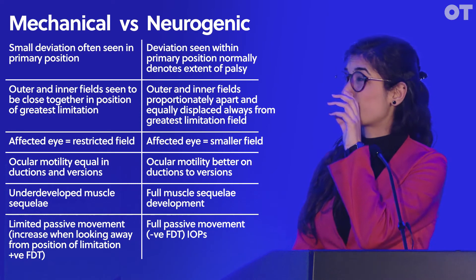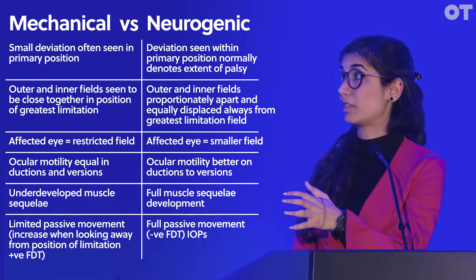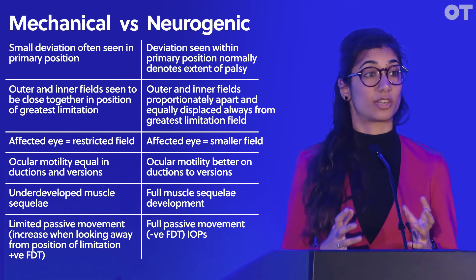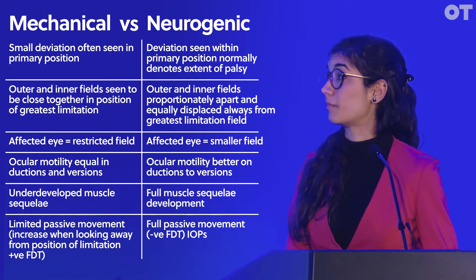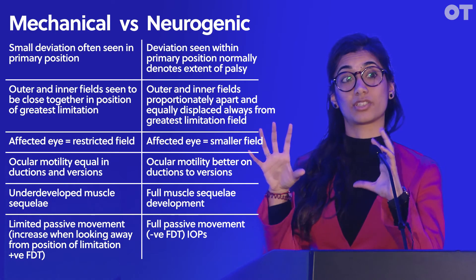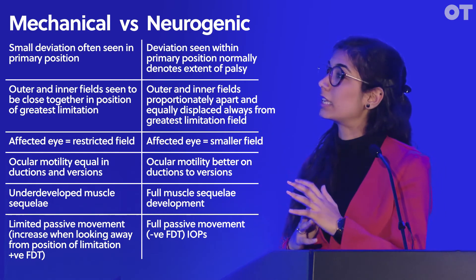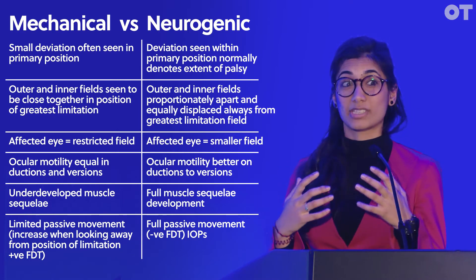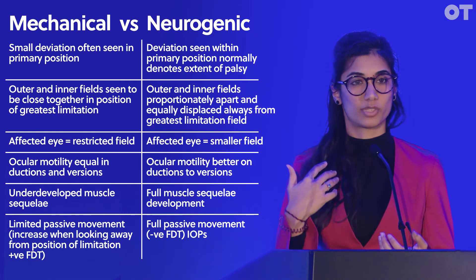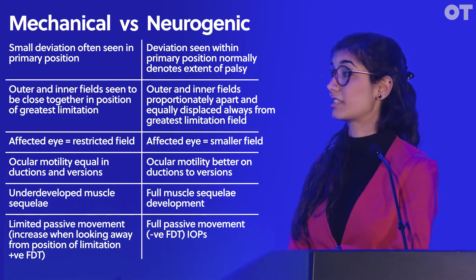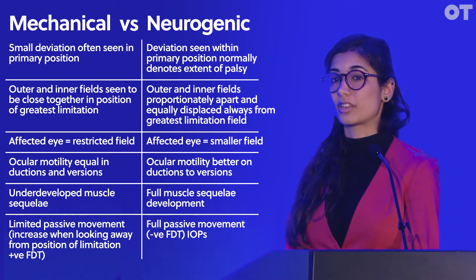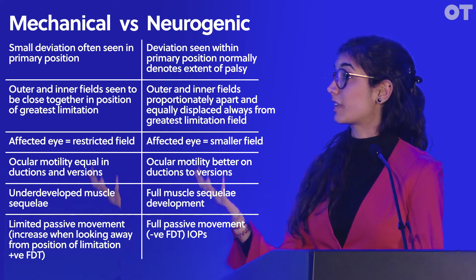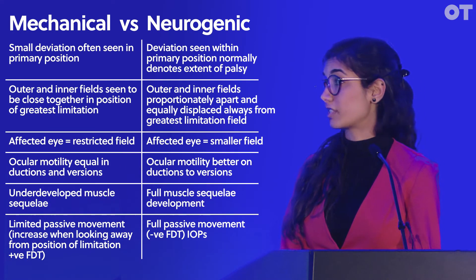With mechanical palsies, because it's a muscle problem, generally in primary position it's quite a small deviation — you don't see much unless you move the eyes into the positions where the deviation is active. With a neurogenic palsy, you can see just how big the palsy is in primary position. Motility in a mechanical deviation is generally equal in ductions and versions, whereas in a neurogenic palsy, motility is better on ductions than versions.